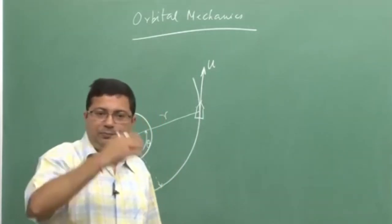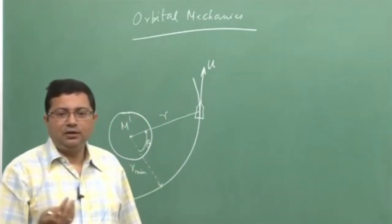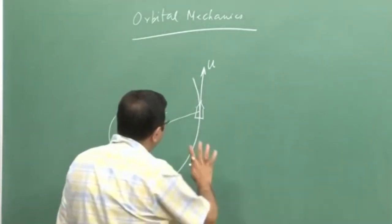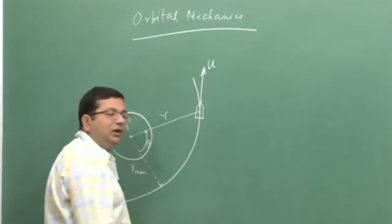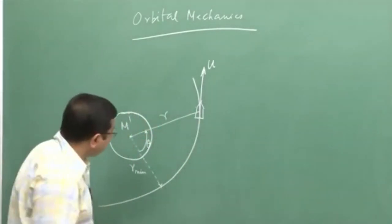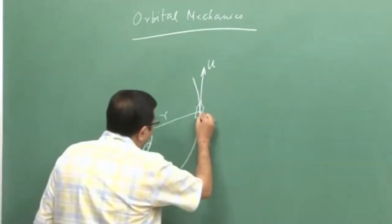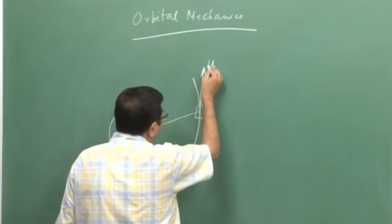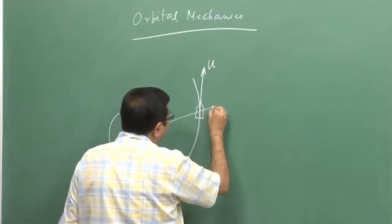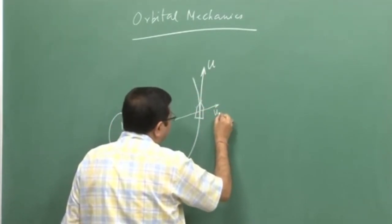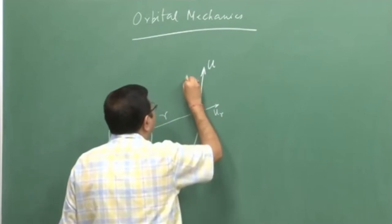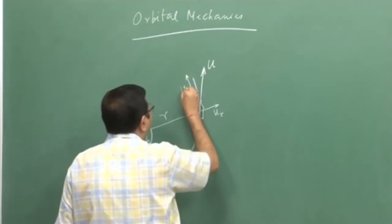The distance of the satellite at any instant of time from the heavenly body center is given by r, and the angle it makes at a particular instant with r min is given by theta. The satellite is moving in a plane and we are considering a polar coordinate system, so the coordinate system is primarily focused on r and theta. The velocity has two components: u_r and u_theta.